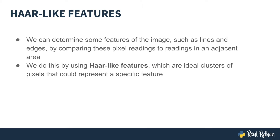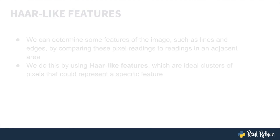To do this, we use what are called Haar-like features. These are ideal clusters of pixels that could represent a specific feature in the image, such as an edge.